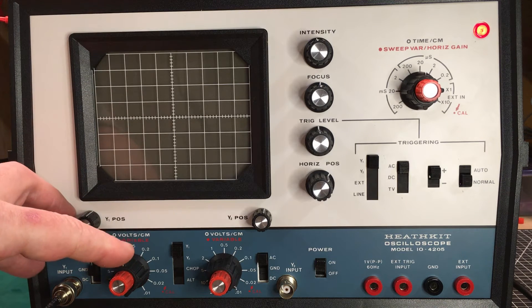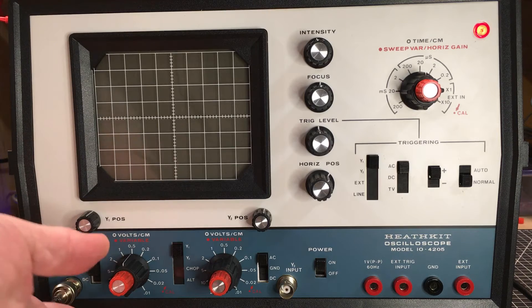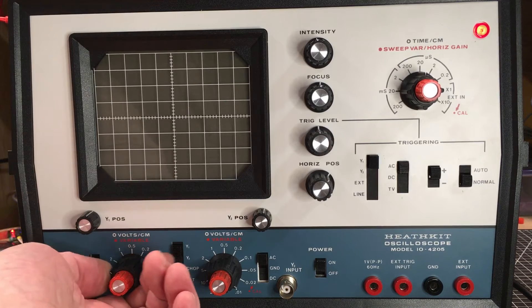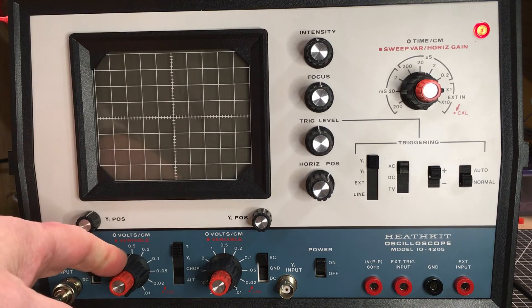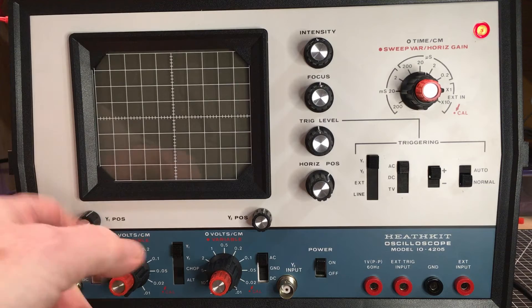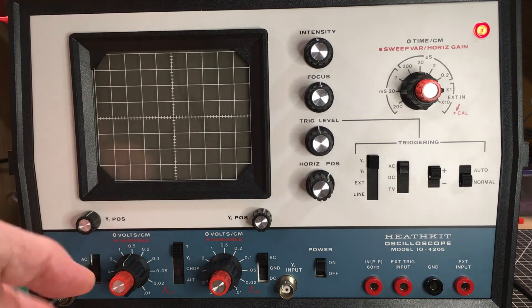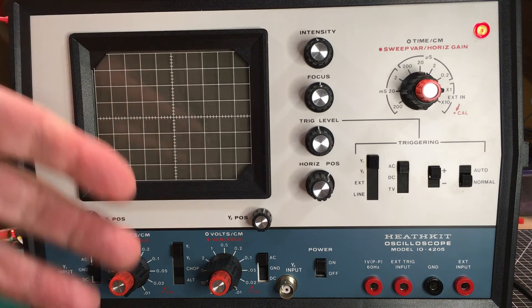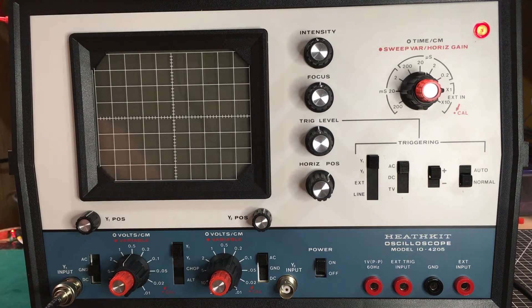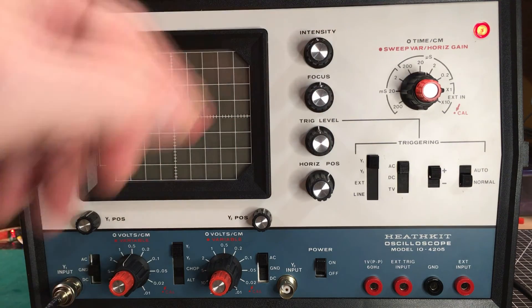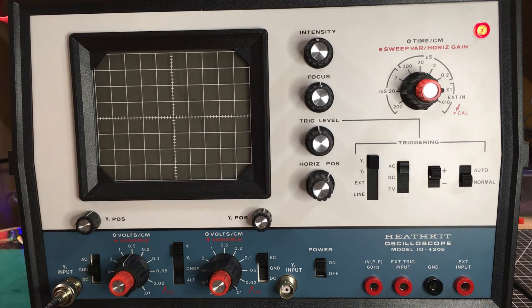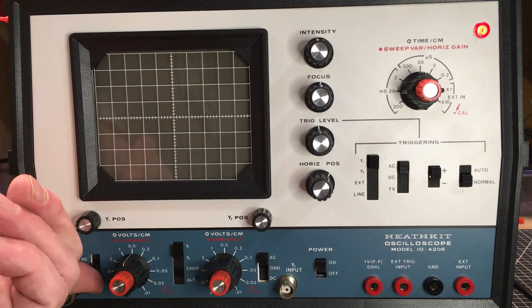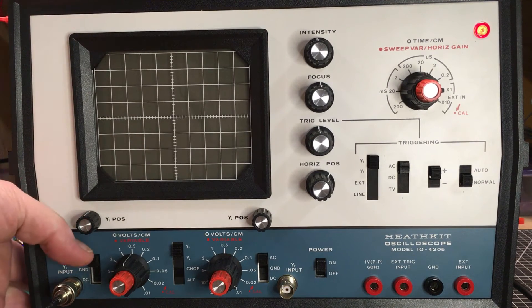Over here we have our vertical control. We can see here, this is the attenuator, so we can choose whatever amplitude that we want. This is usually graduated in volts per division. In this case, volts per centimeter. Divisions are one centimeter here. Generally speaking, if you're going to set up to look at a signal that you're not sure exactly what it's going to be, then put these dials in their middle positions and go from there. Here you have the position control here, and here you have your coupling control.